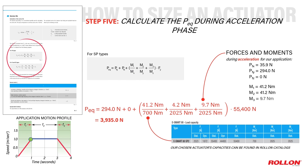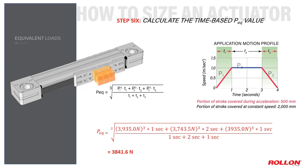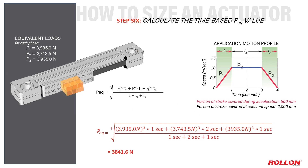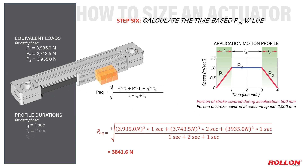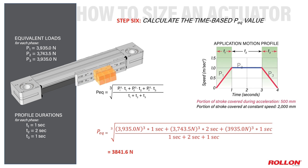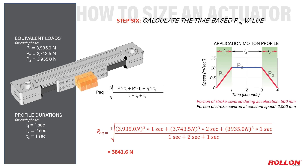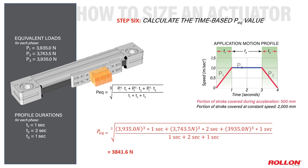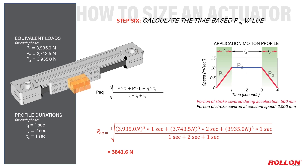Step six in the actuator specification is to calculate the time-based PEQ value that accounts for P1, P2, and P3, representing equivalent payloads at all three portions of the motion profile. P1 acceleration and P3 deceleration have the same value. This equivalent payload PEQ, with a calculated value of 3841.6 N, is what we'll use for our life equations.